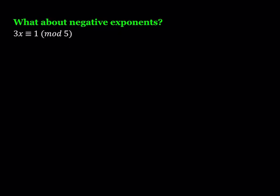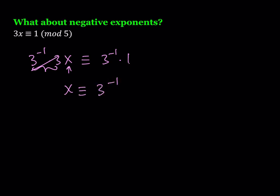What about negative exponents? Division is not a standard procedure — a fraction like one-third is not defined in mod 5 or in any mod. So instead we multiply both sides by the inverse of 3. Multiplying both sides by 3 inverse — multiplying from the left — gives us: when you multiply a number by its inverse you get the identity element, so you're left with x. In other words, the number we're looking for is the inverse of 3 mod 5.